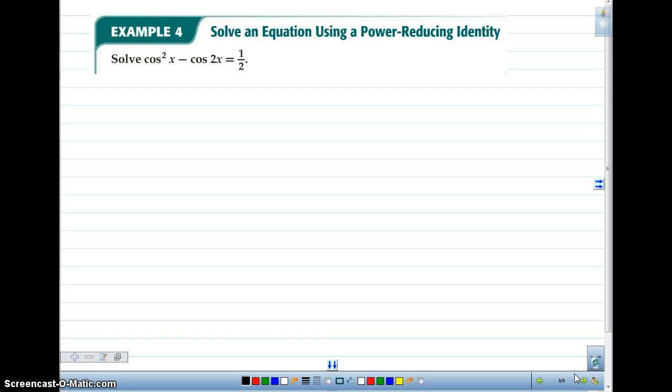Our last example is how to solve an equation by using a power reducing identity. So if you have a power in your equation and you're unable to factor it, especially if you notice that one of your terms has a double angle in it and you have a power term in it as well, we know that if we use our power reducing identity that we'll actually be able to combine this with cosine of 2x. So my power reducing identity says that cosine squared of x is the same as 1 plus cosine of 2x over 2 minus the cosine of 2x is equal to 1 half. I've got two denominators, both of them are two luckily, so if I just multiply all of my terms by 2, I can eliminate these fractions. So I'm going to multiply the first term by 2, the second term by 2, and this last term by 2.